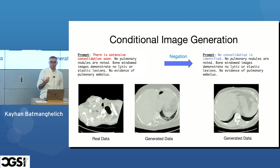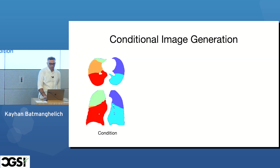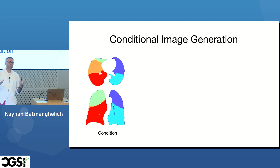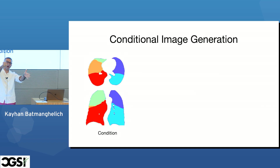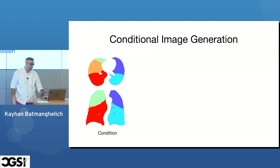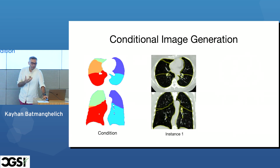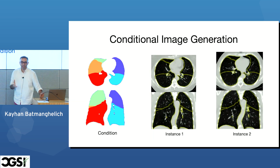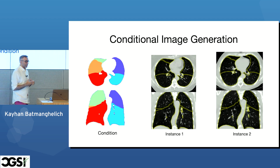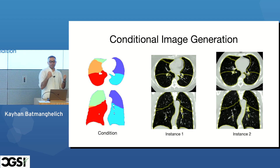You can also control generation for individual patients — for example, conditioning on a patient's specific lobe structure to see how the lung would look if nodules started disappearing. Two images can share the same lobular structure, representing the same individual, but have different textures.